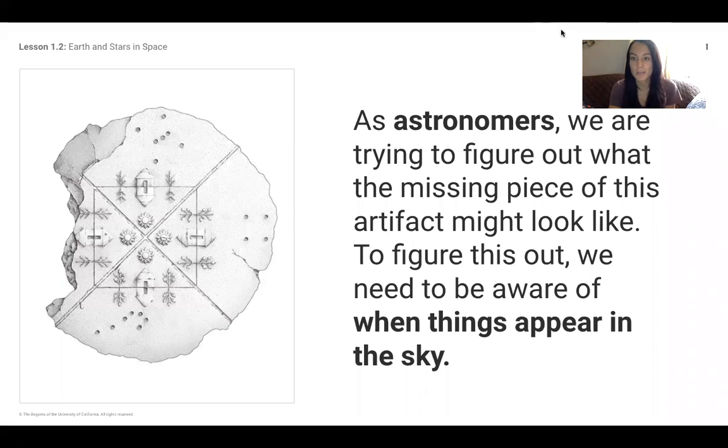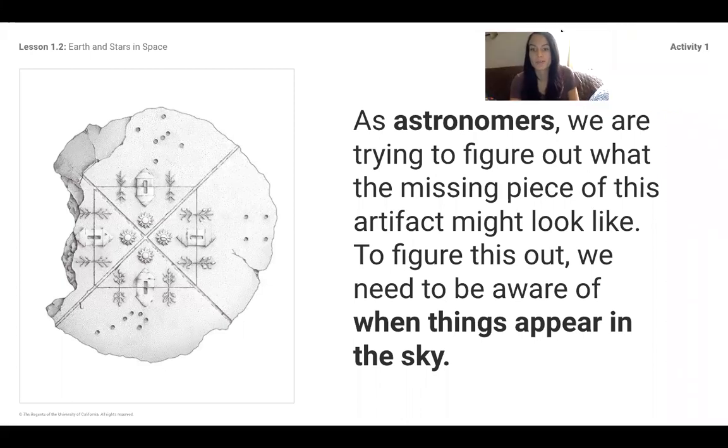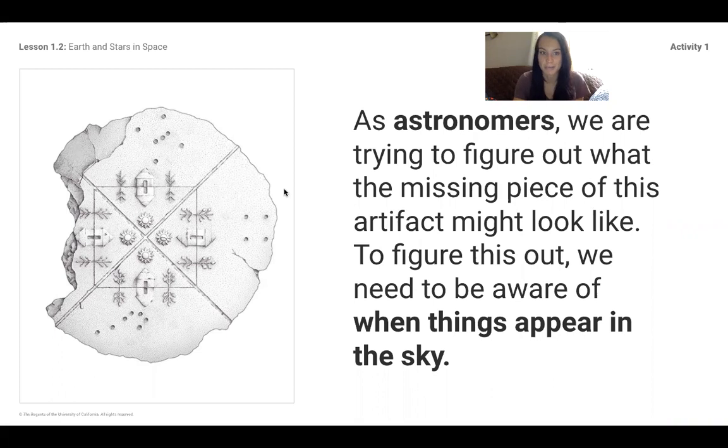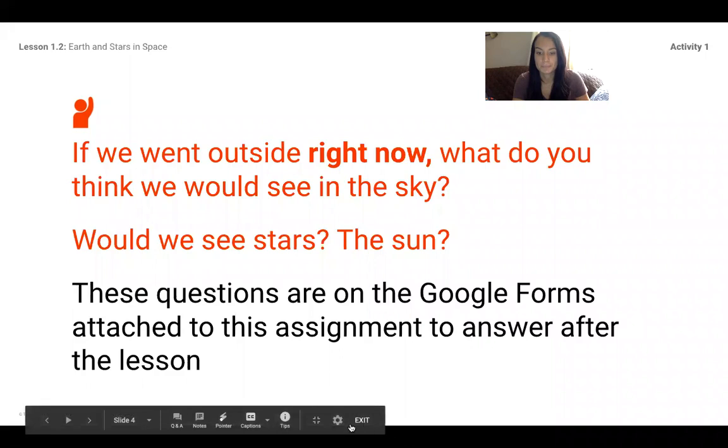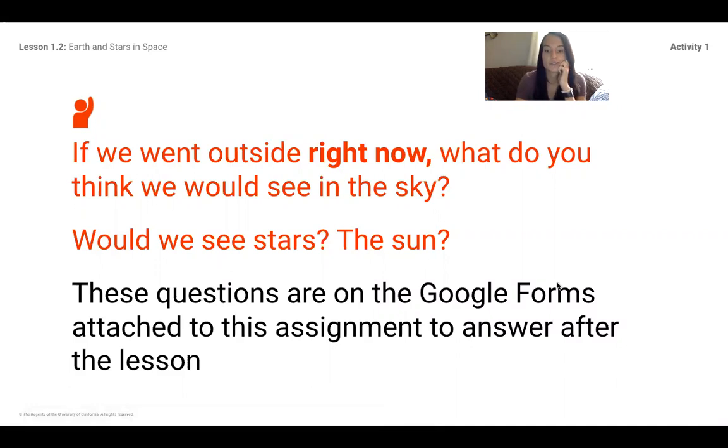As we talked last time, we are astronomers and we're trying to figure out what the missing piece of this artifact looks like. To try to figure this out, we need to be aware of when things appear in the sky. So if you went outside right now at noon, what do you think we could see in the sky? Would we see the stars or the sun? These questions are on Google Forms attached to the assignment.